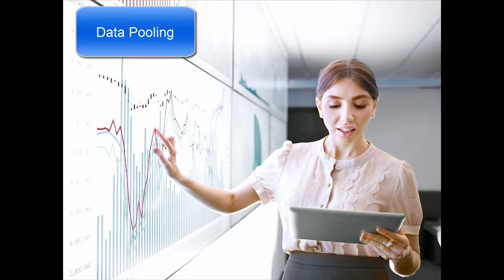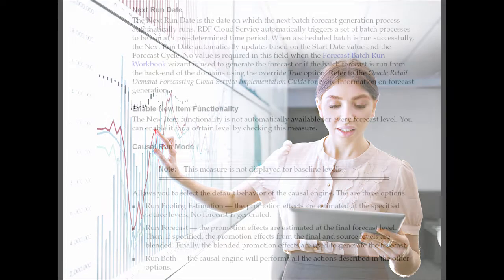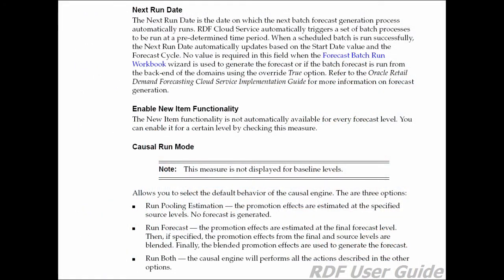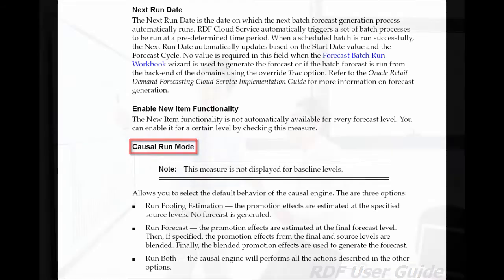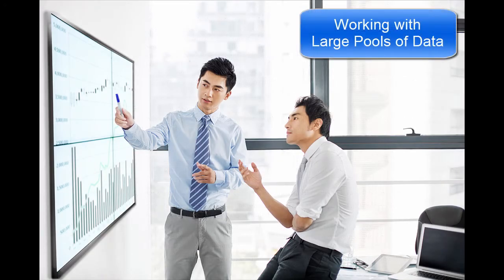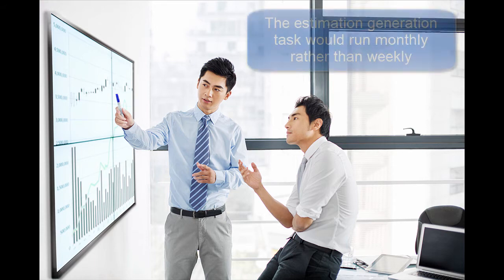Our next topic deals with data pooling. It was introduced in version 15 and allows the estimation of causal events at an aggregate level. In the guide you can learn about causal parameter settings and the next run date topic. The causal run mode section provides additional valuable information. Because you are at this aggregate level you benefit from a large pool of data, and a best practice is not to run the causal estimation very often — for instance, monthly rather than weekly.